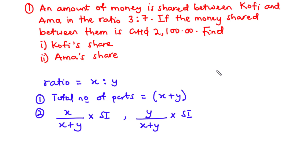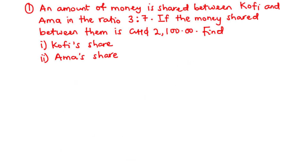Using this information, let's solve question one. An amount of money is shared between Kofi and Ama in the ratio 3:7. If the money shared between them is 2100 Ghana cedis, find (i) Kofi's share and (ii) Ama's share. From the question, the ratio is 3:7, where 3 corresponds to Kofi and 7 corresponds to Ama.